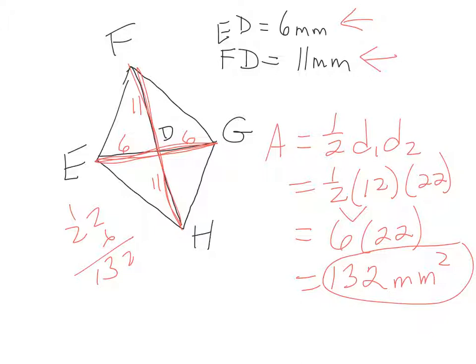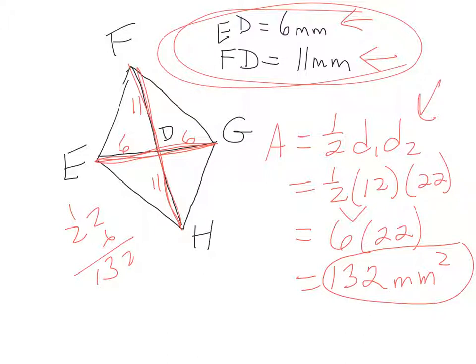For these problems, I'll just tell you, most people make mistakes because they're not reading or paying attention to the details. If they give you half of one of the diagonals, make sure you double it before you plug it in. It's really kind of just drawing it out or kind of marking up the picture. Most people are pretty visual when it comes to geometry.